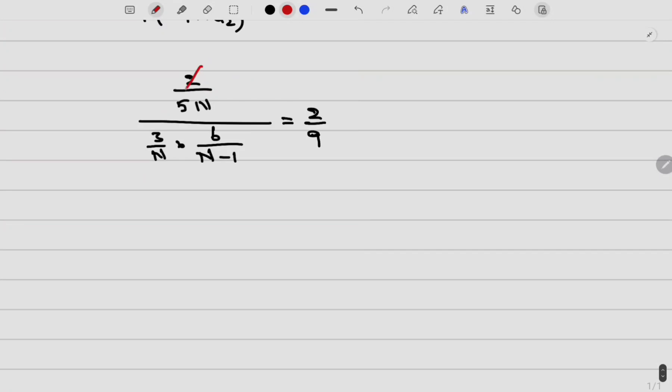Now if you observe here there are some cancellations. Let me cancel out. 1/(5×2) will be equal to 1/(N-1). Therefore N value is 11.